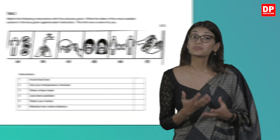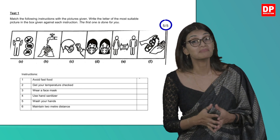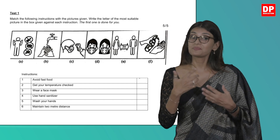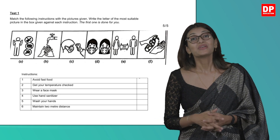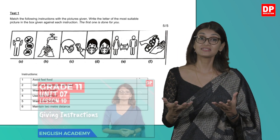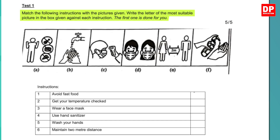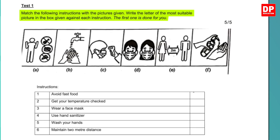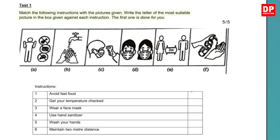Let's look at test one in your paper. Remember, this and every other test or question carries five marks. The first question expects you to match the instructions with the pictures given. You can get an idea of instructions by viewing lesson 10. Read the question carefully, as it states that you need to write the letter of the most suitable picture. Note that the relevant letters are given below each picture.